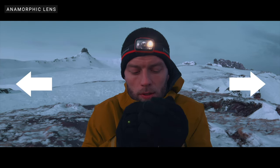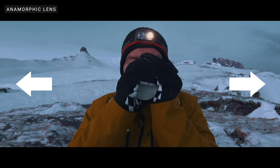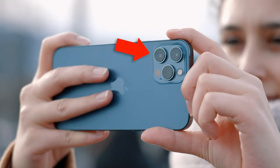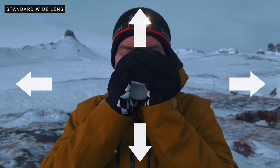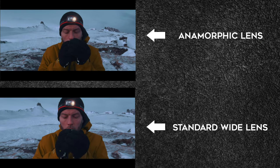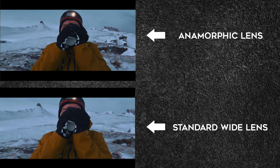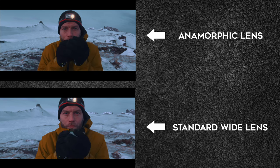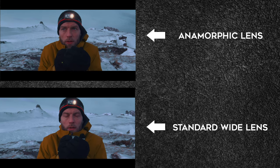With the anamorphic lens, it increases the view sideways, whereas using the standard lens on your iPhone, it increases it in all directions. So with the anamorphic lens, if you want those natural black bars in your video without losing image resolution, this is the option to go with. Because with the standard lens, you would have to add those black bars in your video, losing resolution in the end.